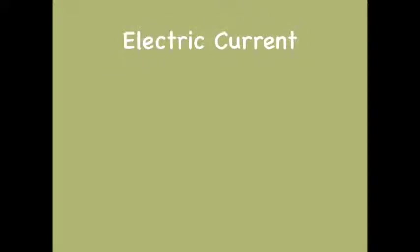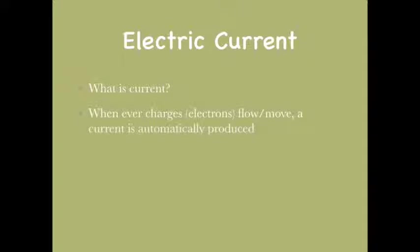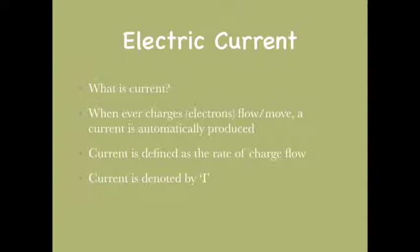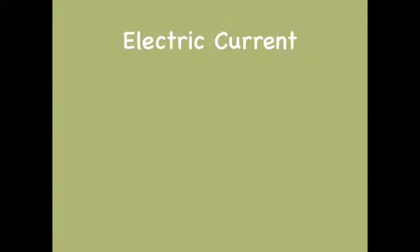Let's start with the first topic: electric current. Whenever charges, which are electrons, flow, current is automatically produced. Current is defined as the rate of charge flow, denoted by the capital letter I, with units of ampere. Mathematically, it is expressed as Q divided by t, where Q is the charge and t is the time.